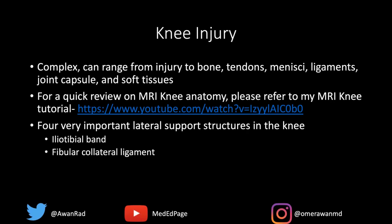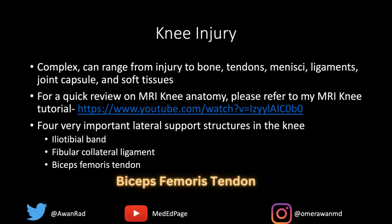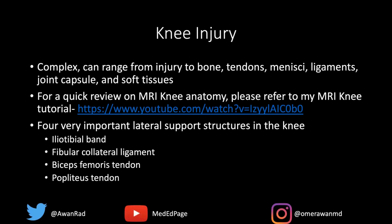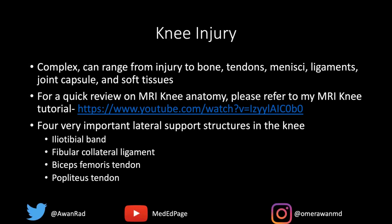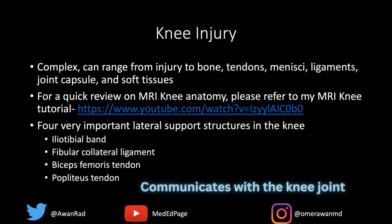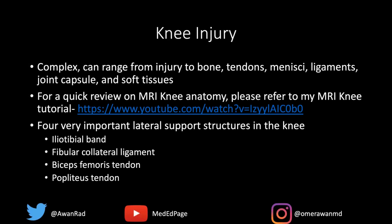Just posterior lateral to the fibular collateral ligament's insertion onto the fibular head, we have the biceps femoris tendon, literally right next to the fibular collateral ligament. Then we have the popliteus tendon, which inserts onto the popliteus sulcus on the lateral femoral condyle. The popliteus tendon communicates with the knee joint the same way the biceps tendon in the shoulder communicates with the glenohumeral joint, so fluid in the knee will often surround the popliteus tendon sheath as a normal finding.